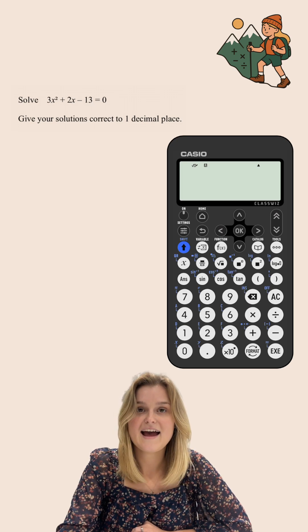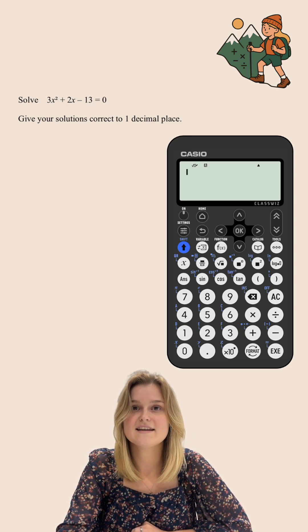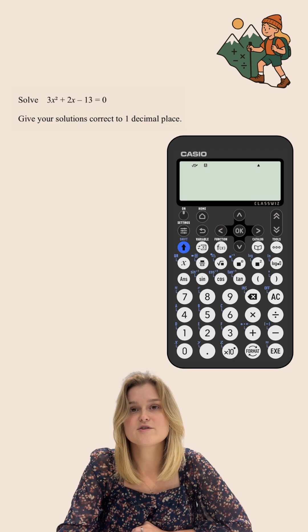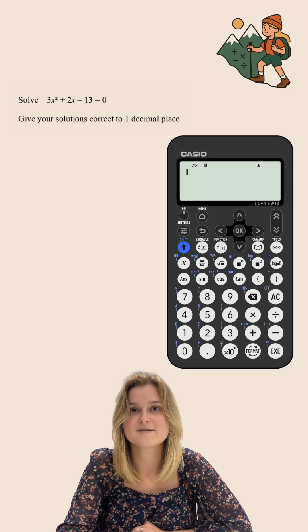Solve 3x² + 2x - 13 = 0. Give your solutions correct to one decimal place.